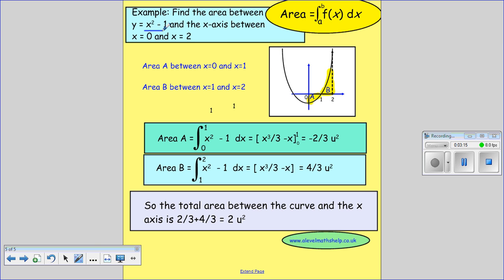You have your curve x squared minus one. So that's a transformation of a parabola quadratic down one. And we're looking at finding it between x equals zero and x equals two. And we can see we go through the x-axis. So we want to split this into two regions, the a region and the b region.